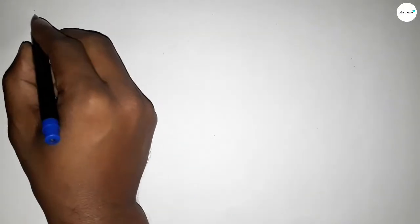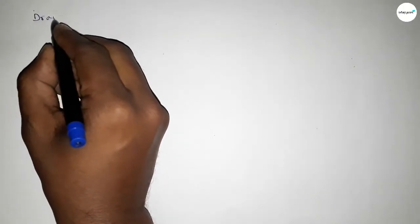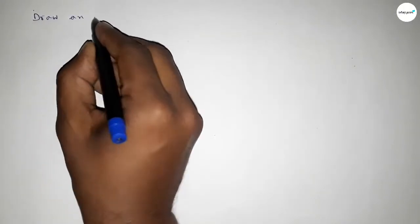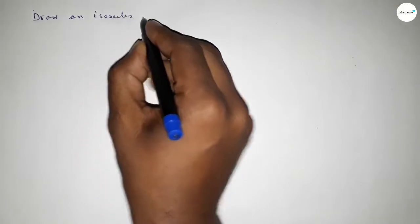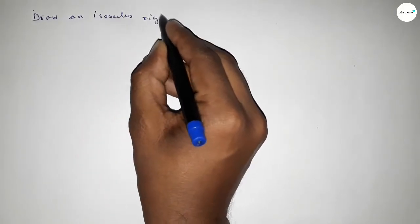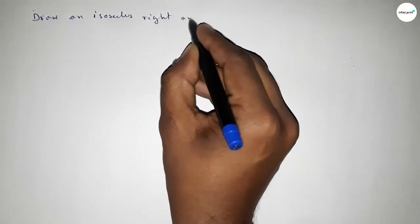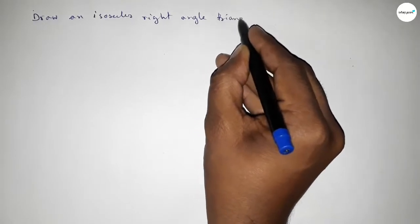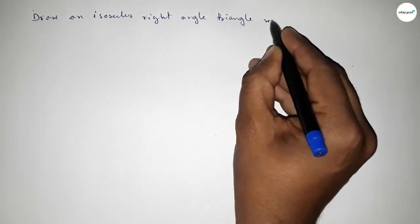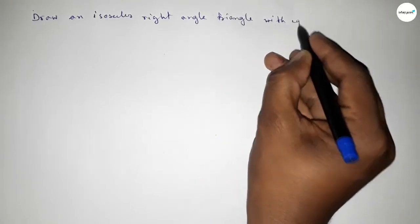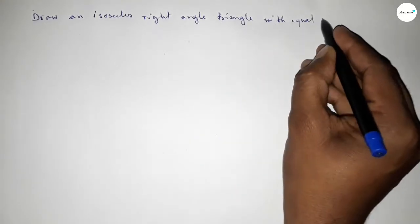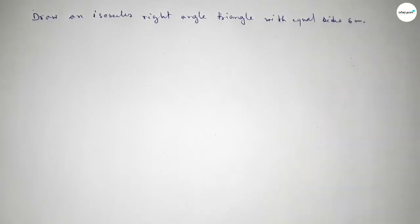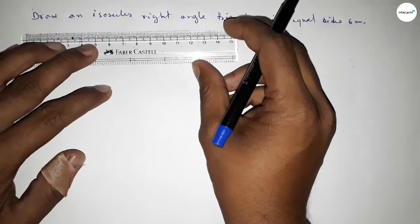Hi everyone, welcome to Essay Share Classes. Today in this video we have to draw an isosceles right angle triangle with two equal sides of 6 centimeters. So let's start constructing an isosceles right angle triangle.